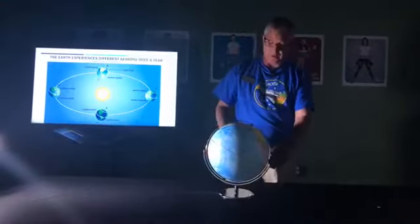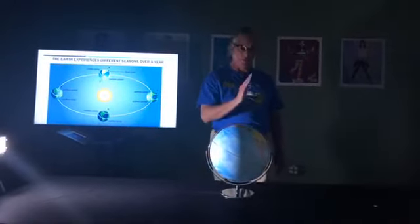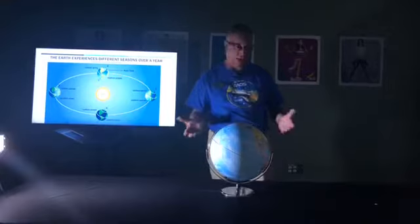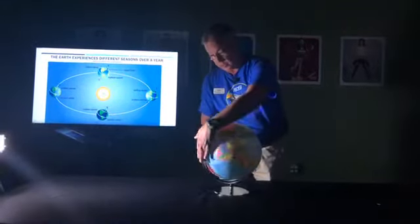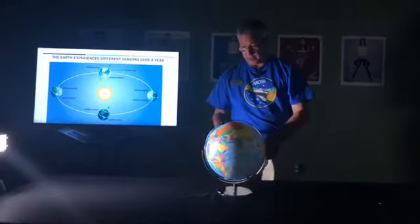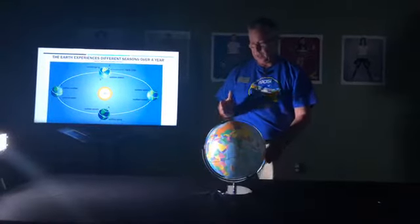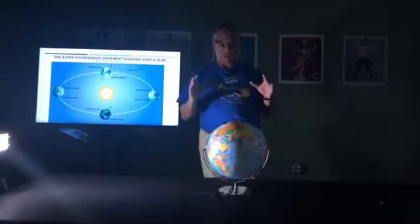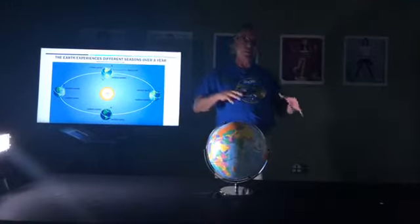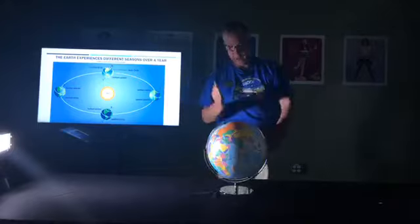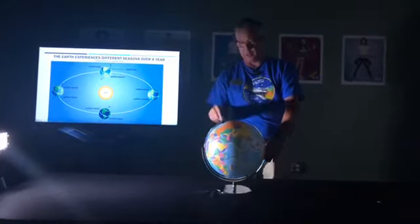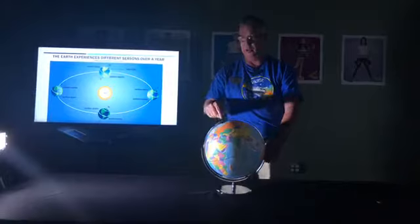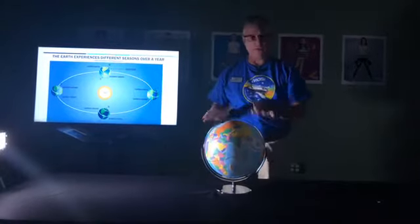The Earth is tilted at 23.5 degrees from upright. If you have a globe at home or from school, you'll see it in the way the globe is mounted — it's not mounted straight up and down. That tilt in the globe points in the same direction throughout the whole year. That's why the North Pole of the globe points to Polaris, the North Star, throughout the whole year.